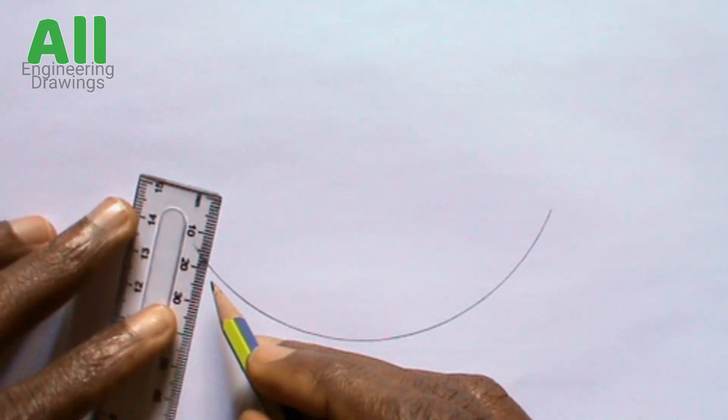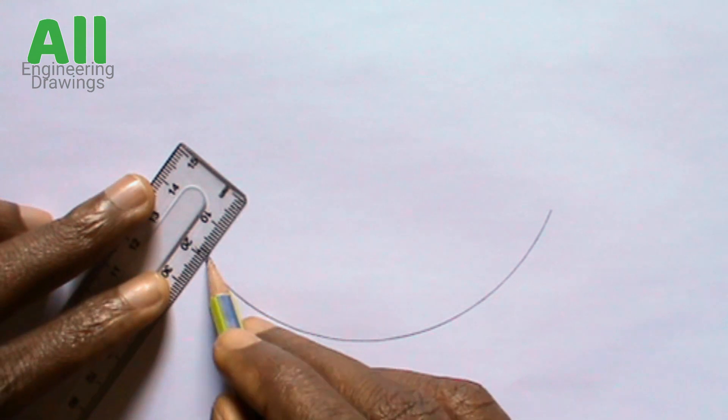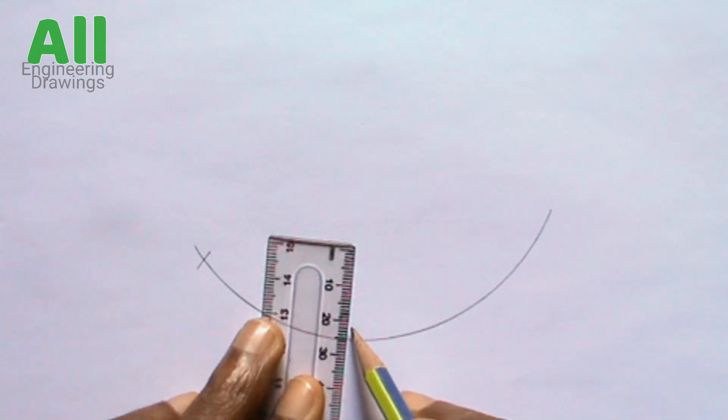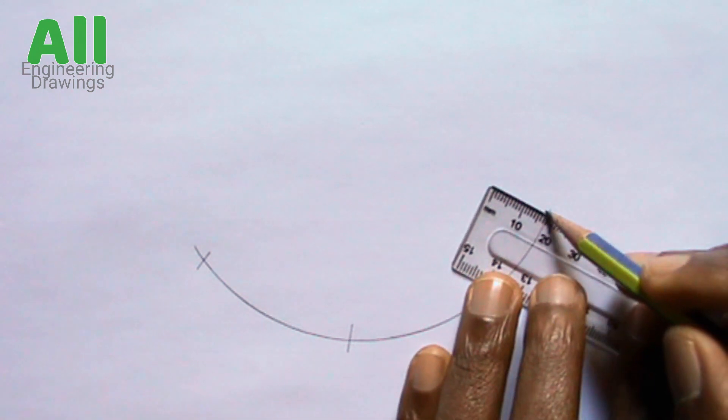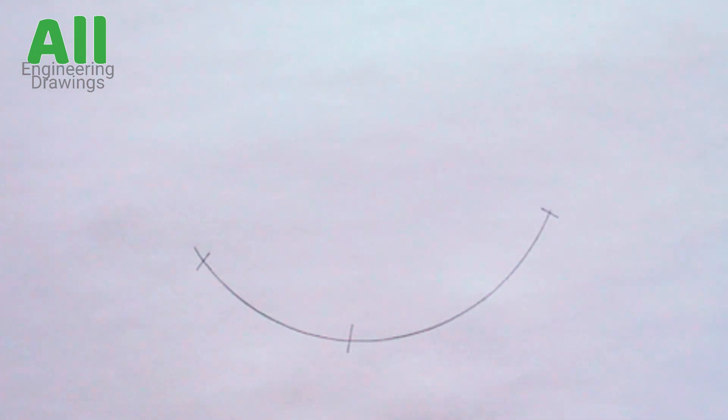Now, to find the center of the arc, mark off three points on the arc. You can label the points you mark.